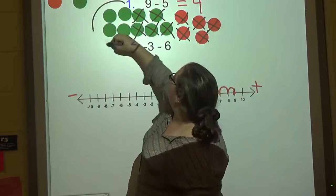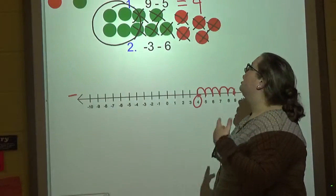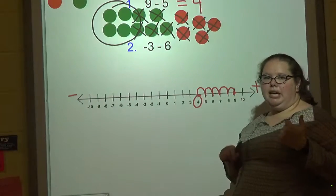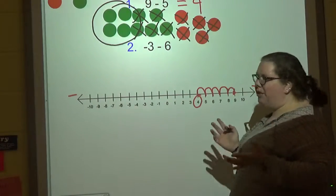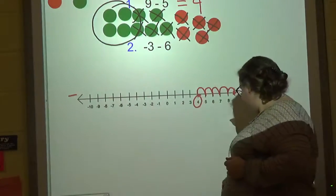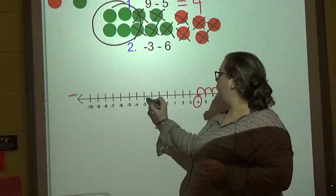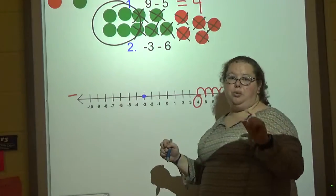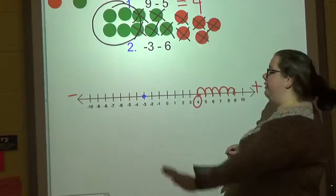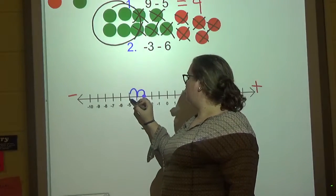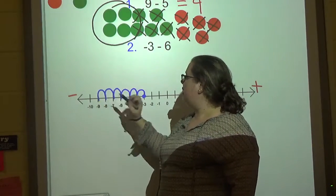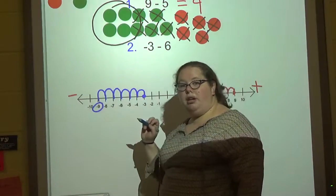We're left with four green. Now what if we have negative three minus six? That one's a little weird. We're starting at negative three on the number line, and we're going which way? Six to the left, since it's subtraction: one, two, three, four, five, six — we end up at negative nine.